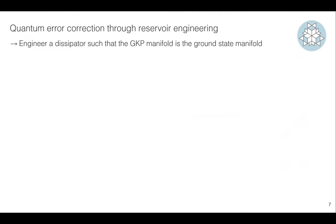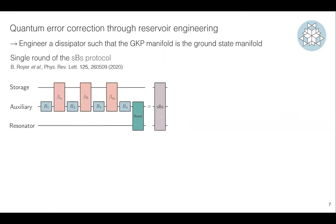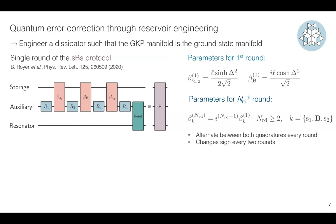Now, how can we do quantum error correction on these states? The idea is to build a circuit that engineers a dissipator such that the GKP manifold is the ground state manifold. One such circuit is the SBS protocol proposed by Betts et al. in 2020. In this protocol you have three pairs of rotation and controlled displacement, plus at the end a reset and one last rotation. The first and third controlled displacements are small, and the one in the middle is big.